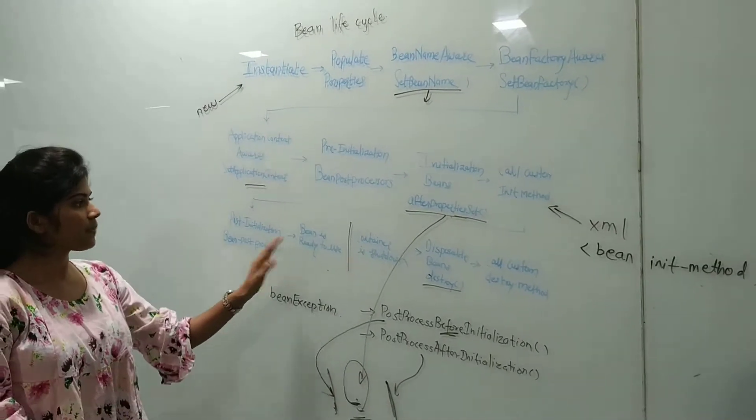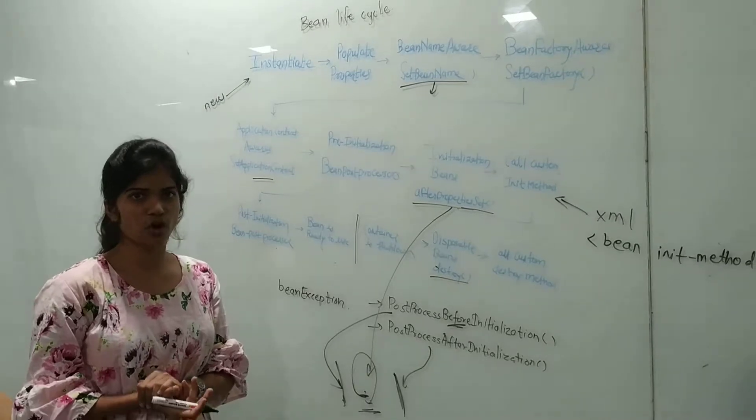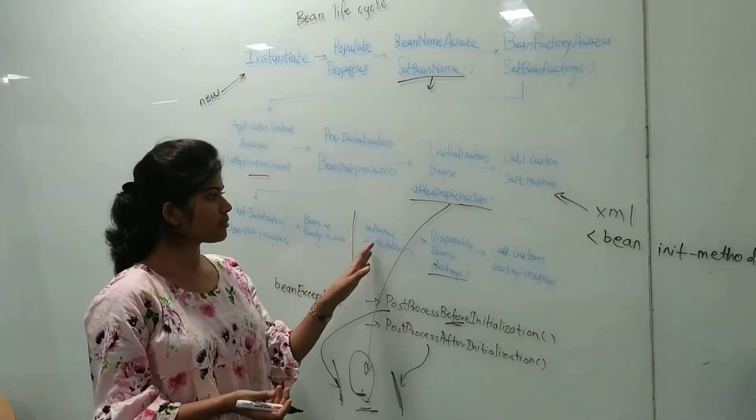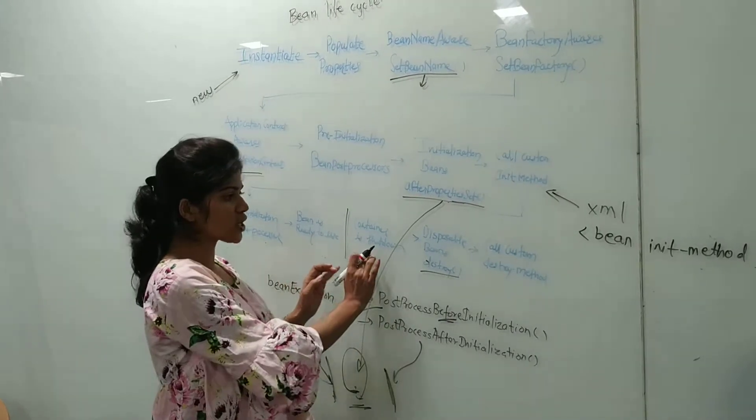After all these processes, the bean is ready to use. We can make use of that object for the right view. Then the container gets shut down.